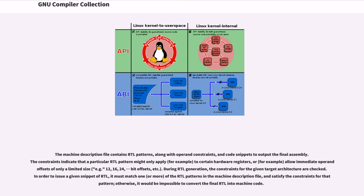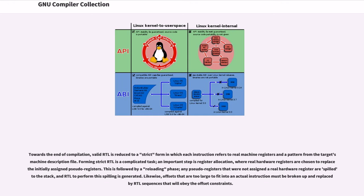During RTL generation, the constraints for the given target architecture are checked. In order to issue a given snippet of RTL, it must match one or more of the RTL patterns in the machine description file and satisfy the constraints for that pattern, otherwise it would be impossible to convert the final RTL into machine code. Towards the end of compilation, valid RTL is reduced to a strict form in which each instruction refers to real machine registers from the target's machine description file. Forming strict RTL is a complicated task; an important step is register allocation, where real hardware registers are chosen to replace the initially assigned pseudo-registers. This is followed by a reloading phase: any pseudo-registers that were not assigned a real hardware register are spilled to the stack, and RTL to perform the spilling is generated. Likewise, offsets that are too large to fit into an actual instruction must be broken up and replaced by RTL sequences that will obey the offset constraints.